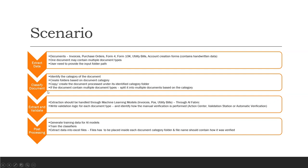The third scenario is extract and validate. For extraction we'll be using several machine learning models — invoices, purchase orders, and utility bills through AI Fabric. We'll be writing different validation logics to identify whether to automatically verify, present the validation station, or present the Action Center as a task. Finally, once data is extracted and validated, you need to train the AI models and frame the classifiers, with the final output going into several Excel files.